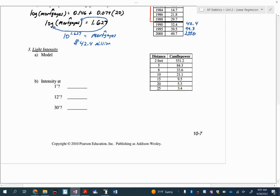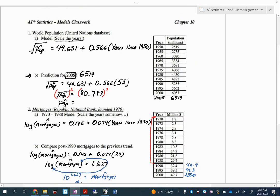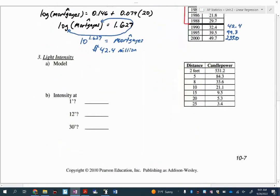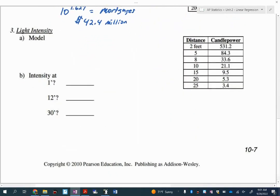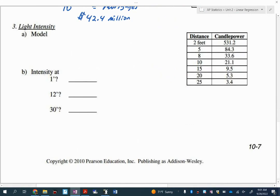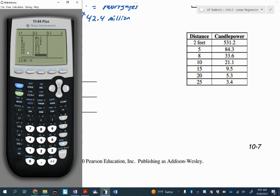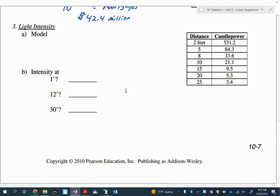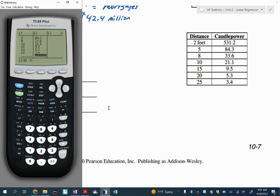This is the last classwork example. Hopefully you've already watched the videos for one and two, getting a chance to practice the button pushing for re-expressing. Don't forget you can pause at any time to make sure you're practicing. I went ahead and typed in my x for distance and my y for candle power, so I'm saying the distance from the light is going to explain the candle power. I'm going to check the original scatter plot. Zoom nine, let's see what it looks like.